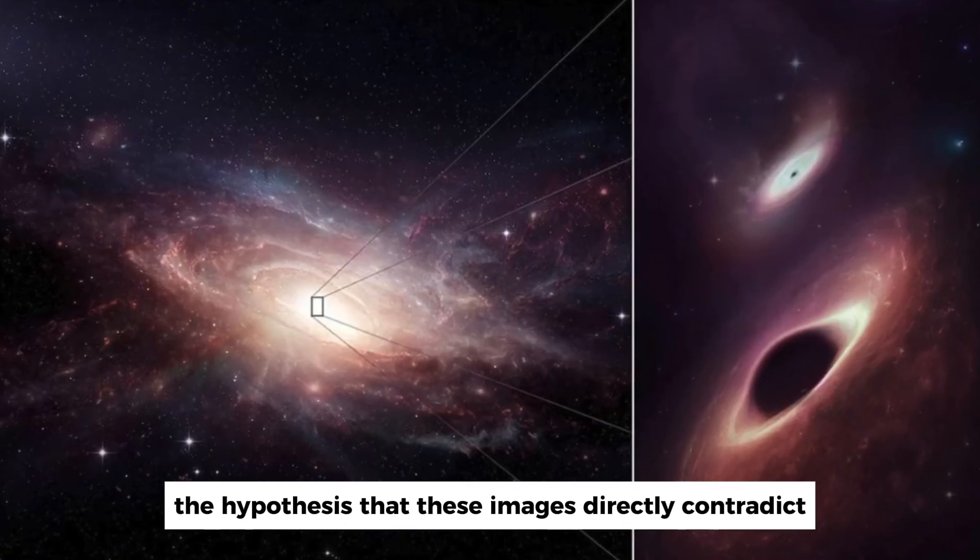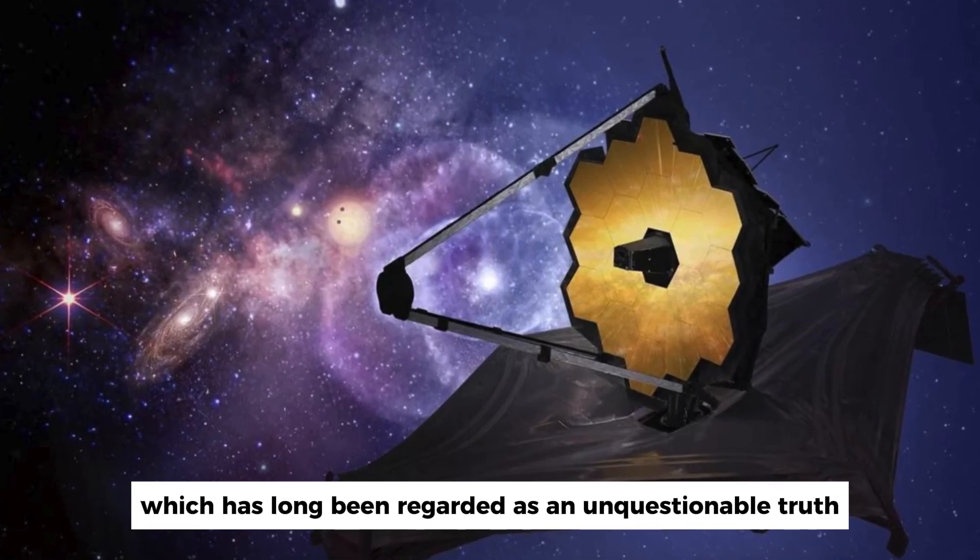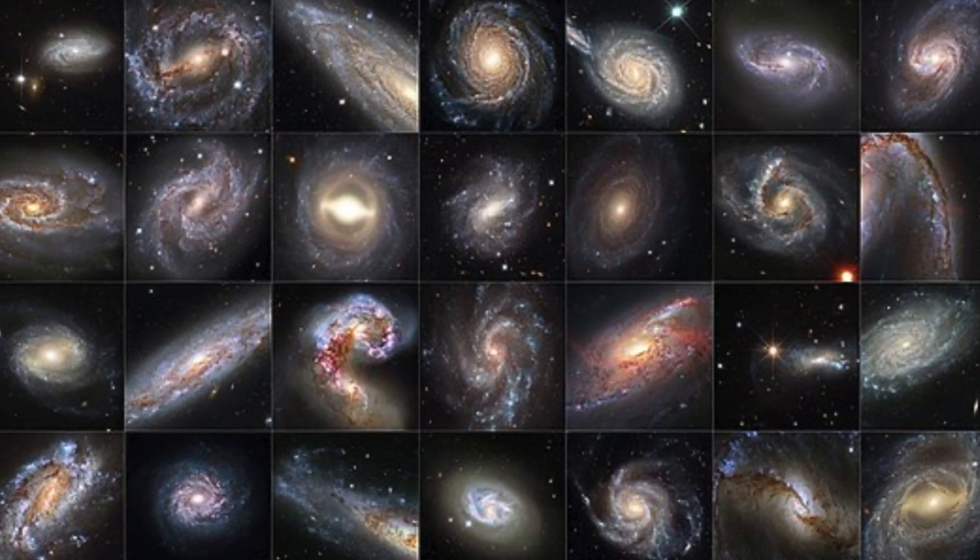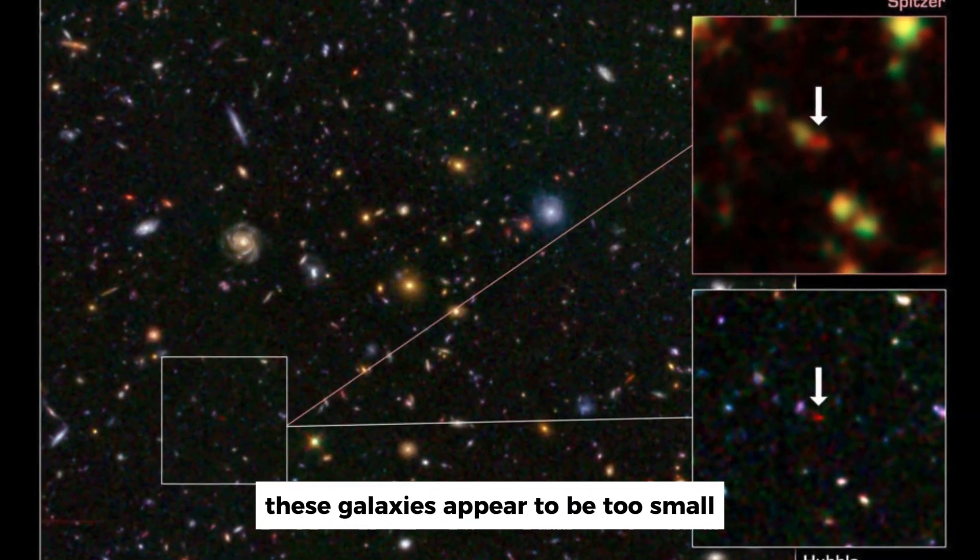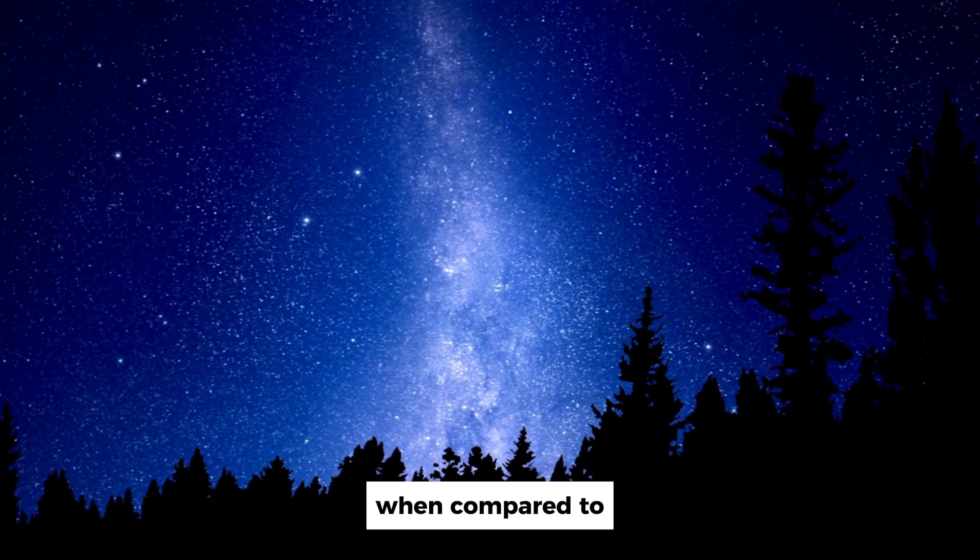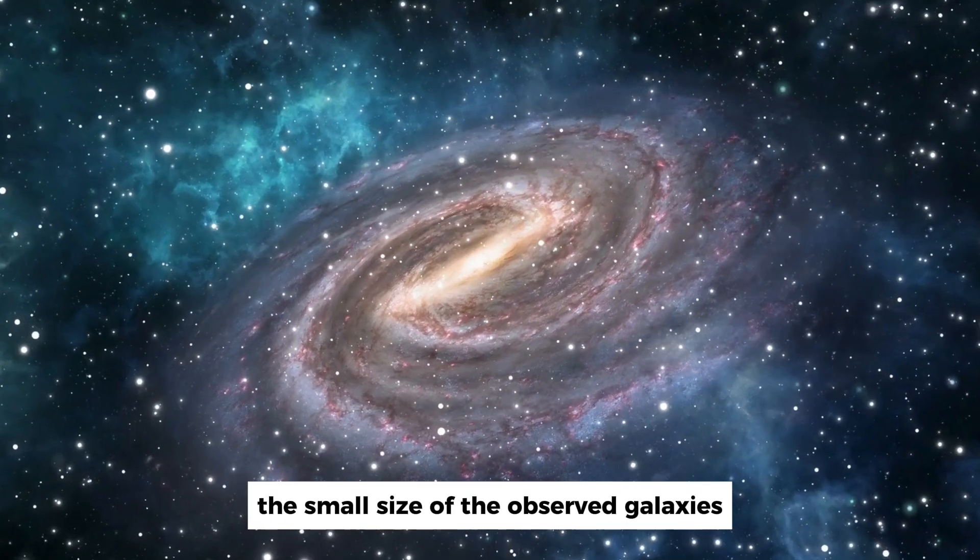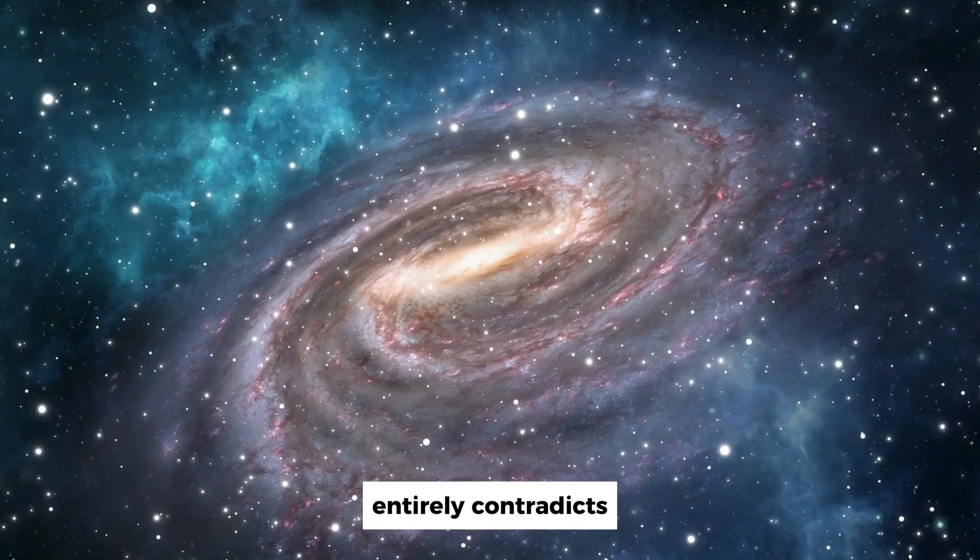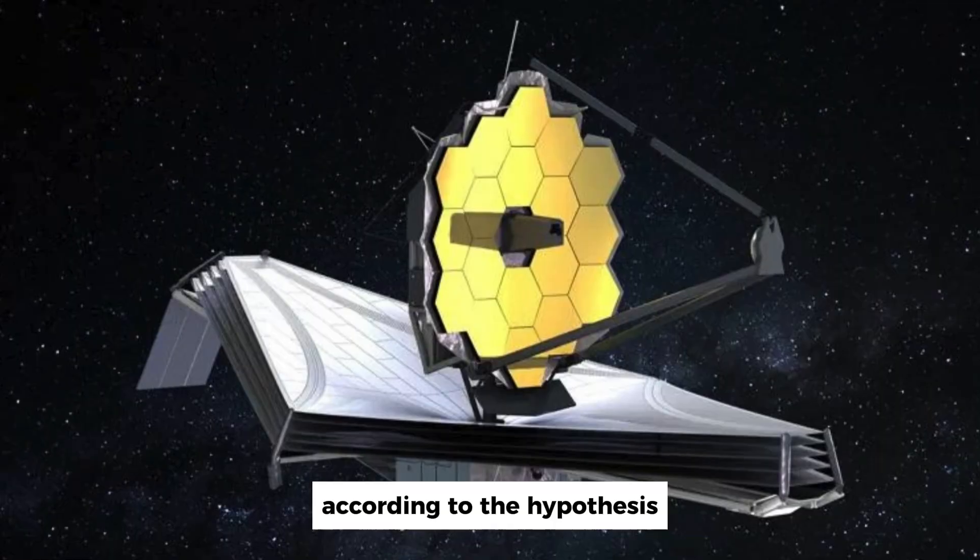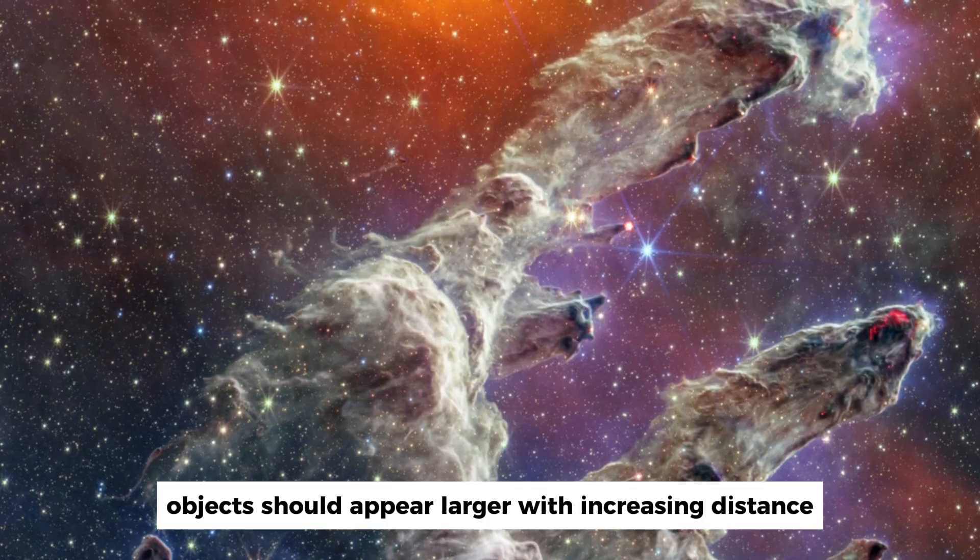The hypothesis that these images directly contradict is the Big Bang hypothesis, which has long been regarded as an unquestionable truth by the majority of cosmological theorists. These galaxies appear to be too small, too smooth, too old, and too numerous when compared to the predictions of the Big Bang hypothesis. The small size of the observed galaxies entirely contradicts the expected behavior in an expanding universe.